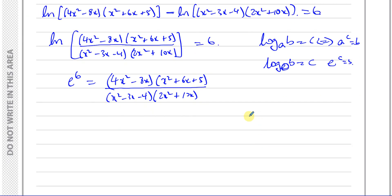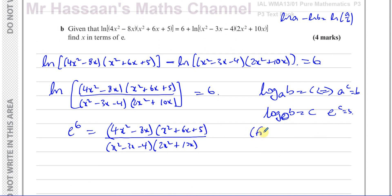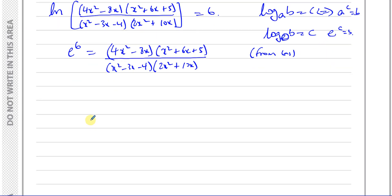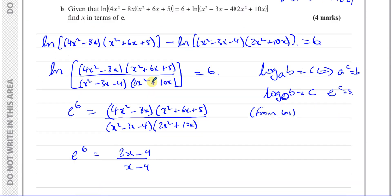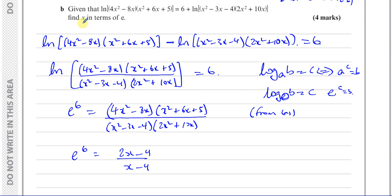Using the definition of logarithms: log base A of B equals C means A to the power of C equals B. Since ln means log base e, we have e⁶ equals the fraction inside the ln. And since that fraction is exactly what we simplified in part A, we can substitute directly: e⁶ = (2x−4)/(x−4).